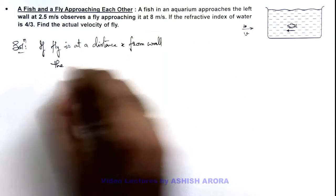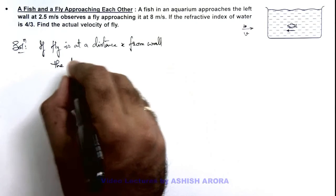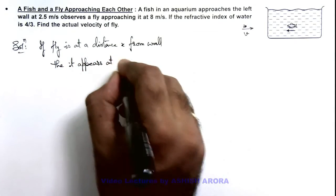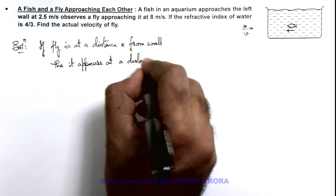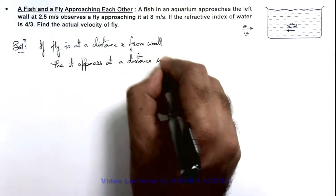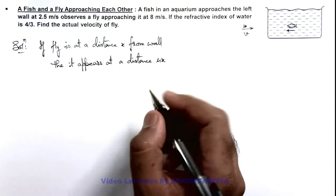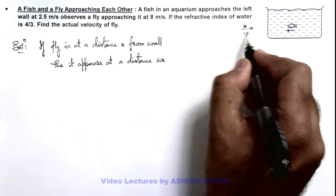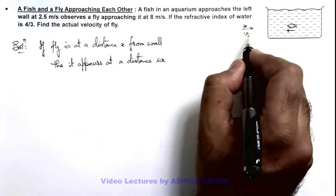Then to fish we can say it appears at a distance mu x. Now in this situation if it is actually approaching to the wall with a speed v, to fish it appears that it is approaching at a speed mu v.